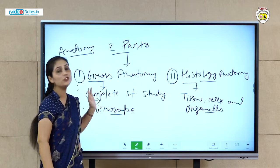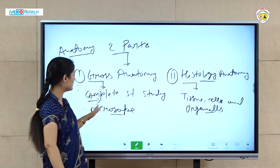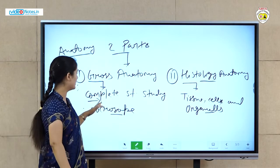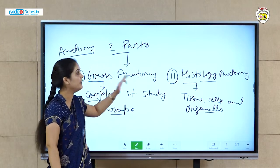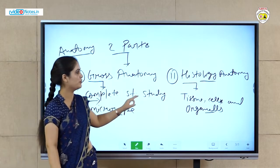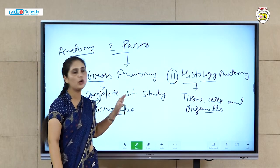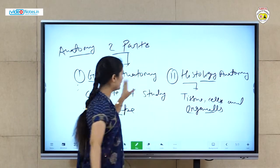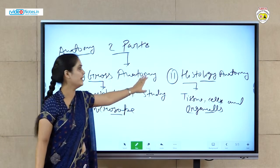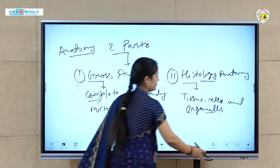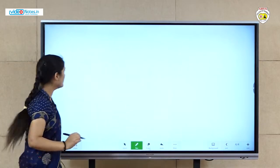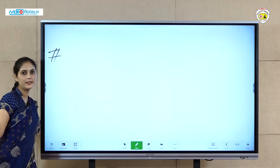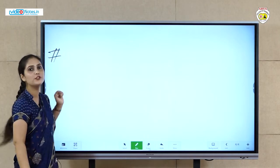What is the difference between these two? In gross anatomy, we study organs and organ systems. In histology anatomy, we study tissues, cells, and organelles. These are the basic differences between gross anatomy and histology anatomy. Next, our next topic is physiology.